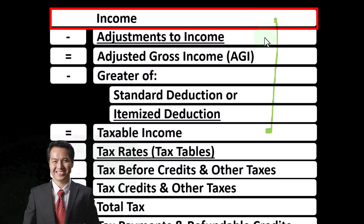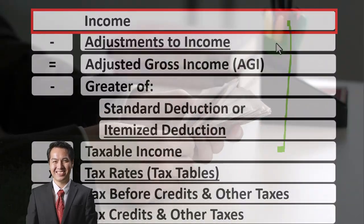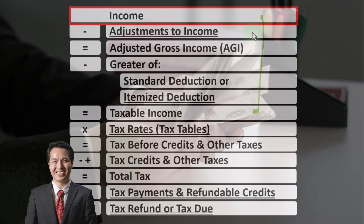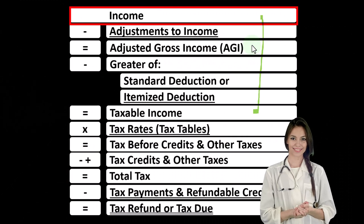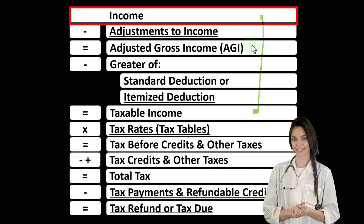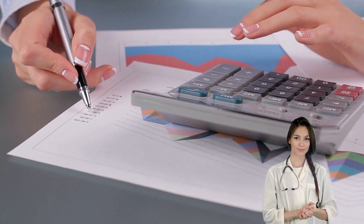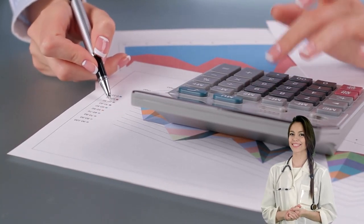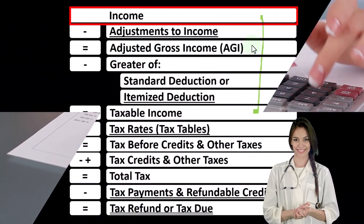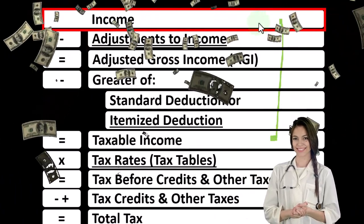Then we have the adjustments to income, which you could call above-the-line deductions, similar to expenses in income statement terminology. This gets us to the subtotal of adjusted gross income, or AGI, an important subtotal. Because when we look at phase-outs — for example, as income levels rise — phase-outs of credits and deductions are usually based on this subtotal, adjusted gross income, rather than the income line.